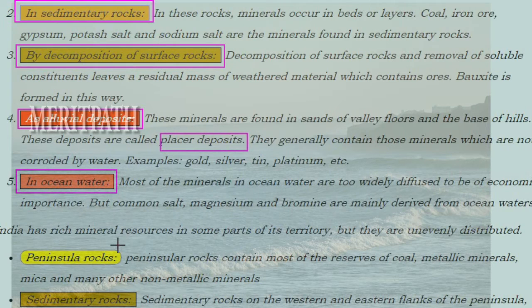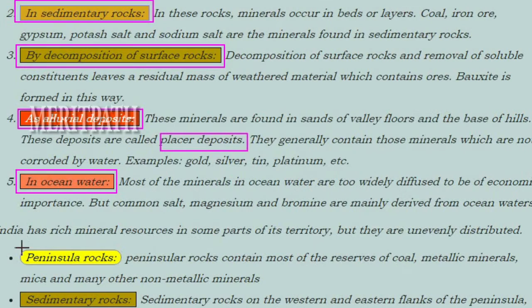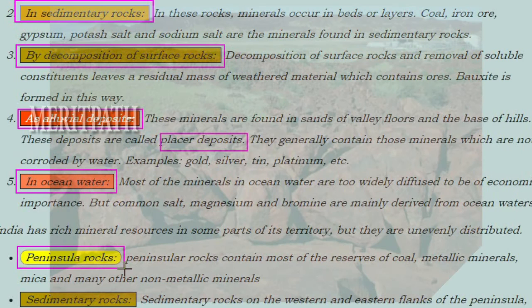India has rich mineral resources in some parts of its territory, but they are unevenly distributed. The peninsula rocks contain most of the reserves of coal, metallic minerals, mica, and many other non-metallic minerals.